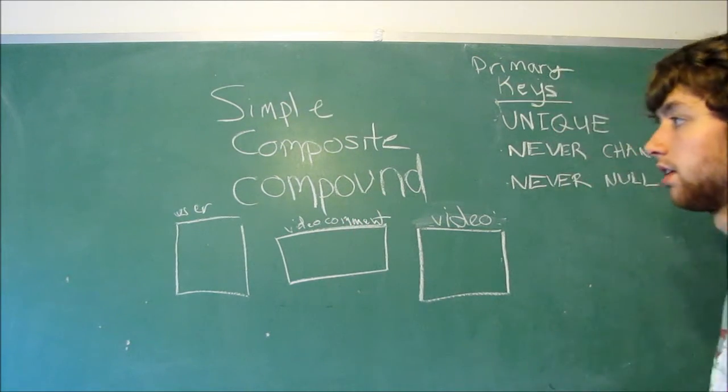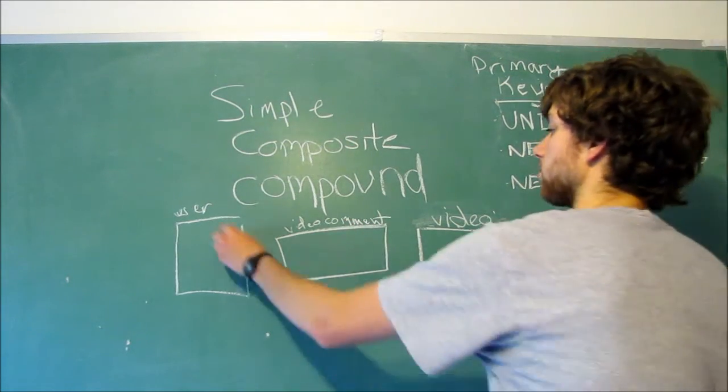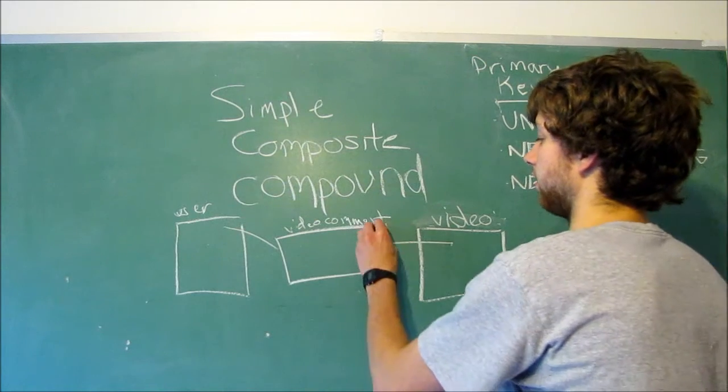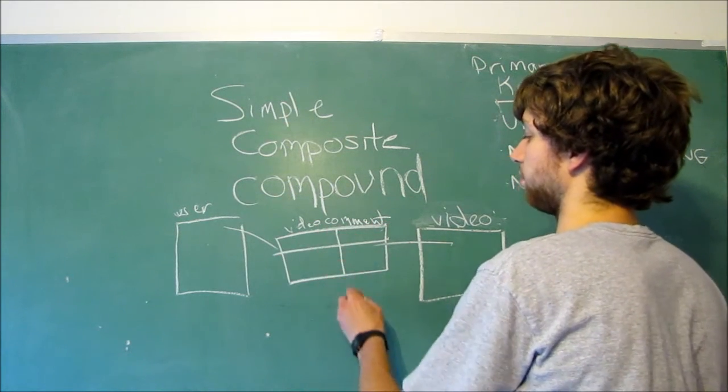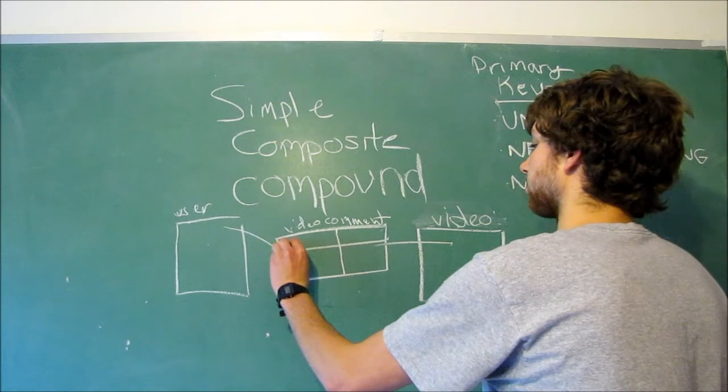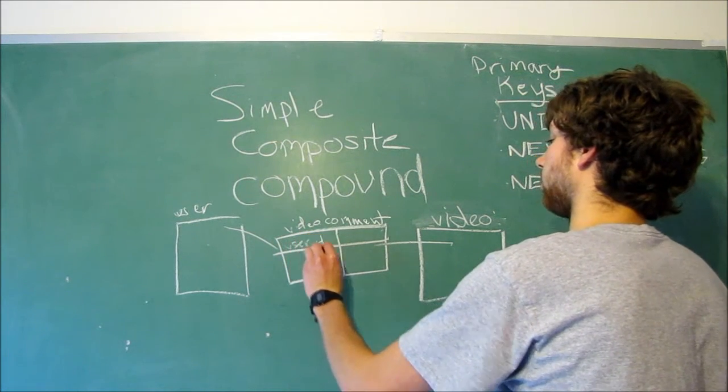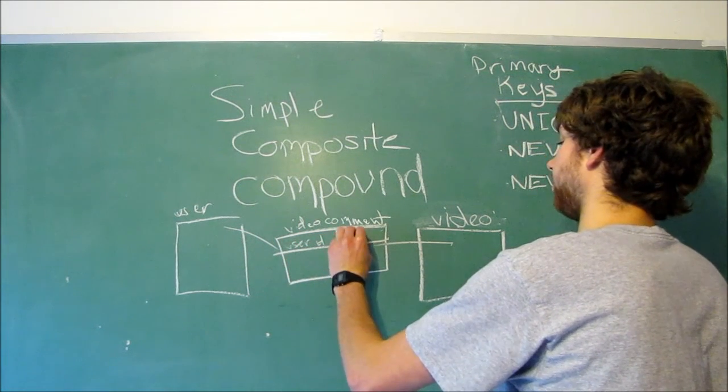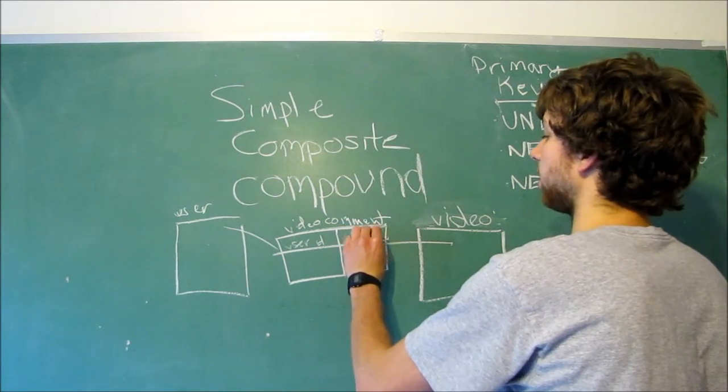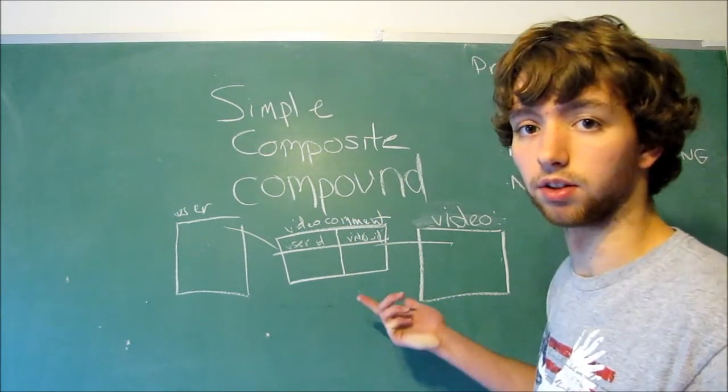So, we get a connection between the user and the video to create an intermediary table. And it's split up with two keys. So, we have the user ID and then the video ID. And then we could have another column for the message or the date or whatever else.